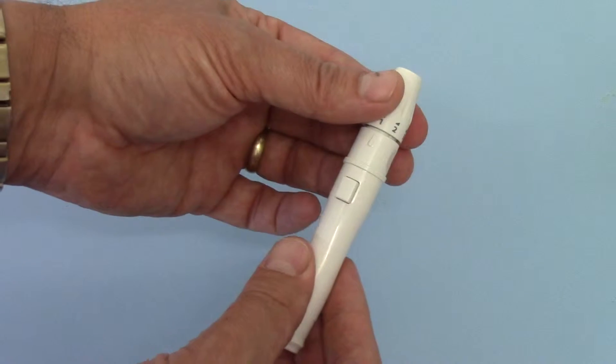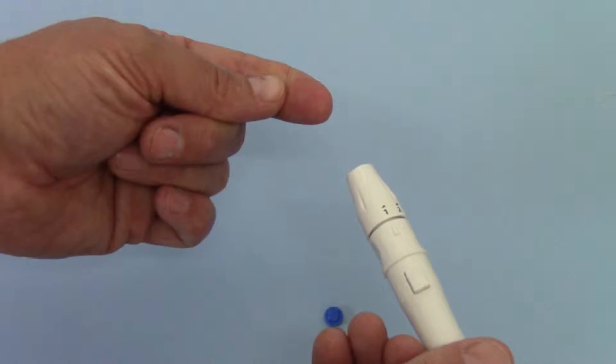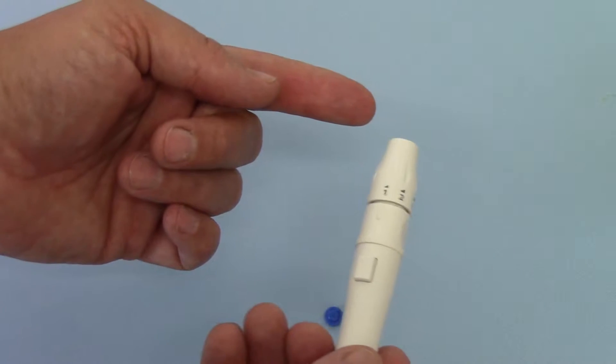Then to trigger the device, it's simply applied onto the area that you wish to take the blood sample from.